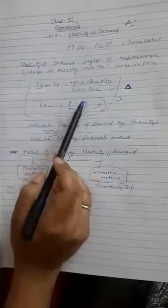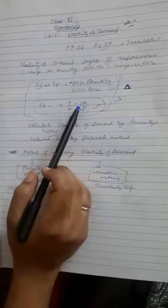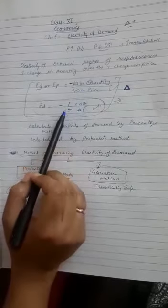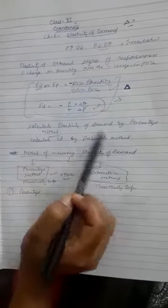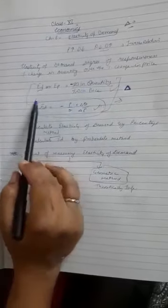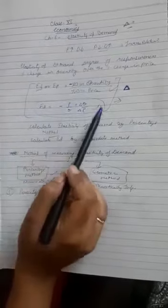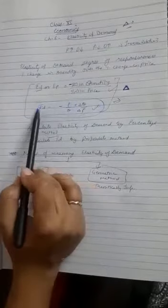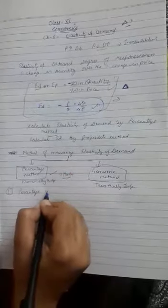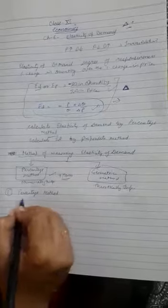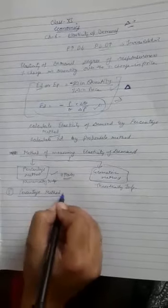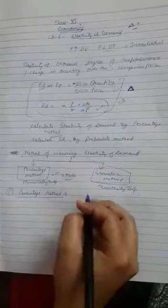If there is a percentage method, then there is no separate formula. But if you call it a proportionate method, then you have to use a particular formula. The percentage method will come in theory.